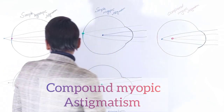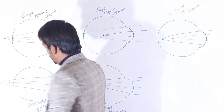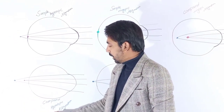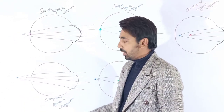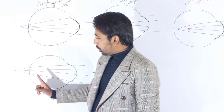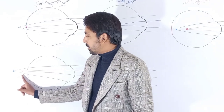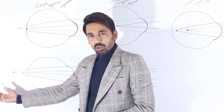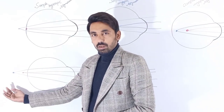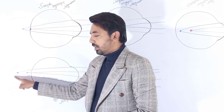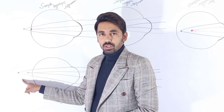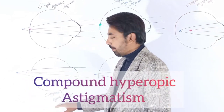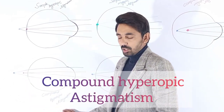Now, compound hyperopic astigmatism. As you can see, both of the focal points of the light rays are focused behind the retina but at different positions. So this is called compound hyperopic astigmatism.